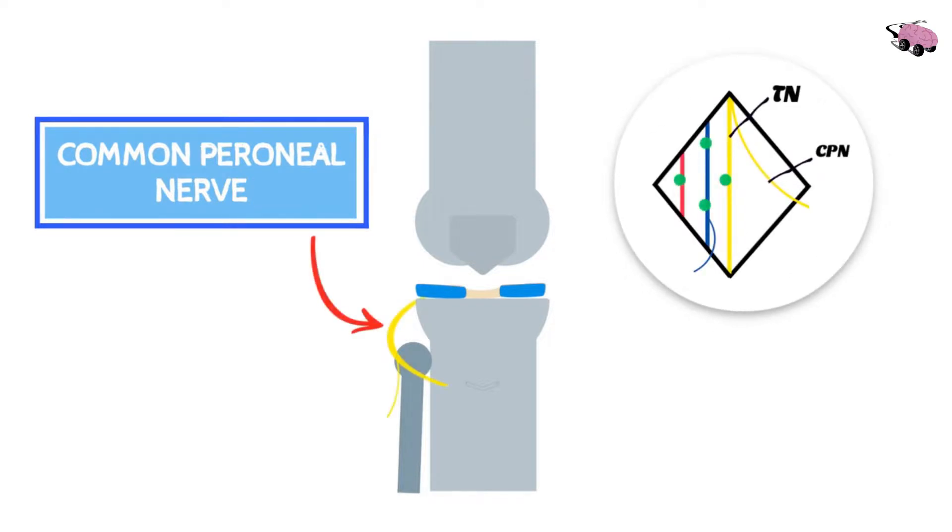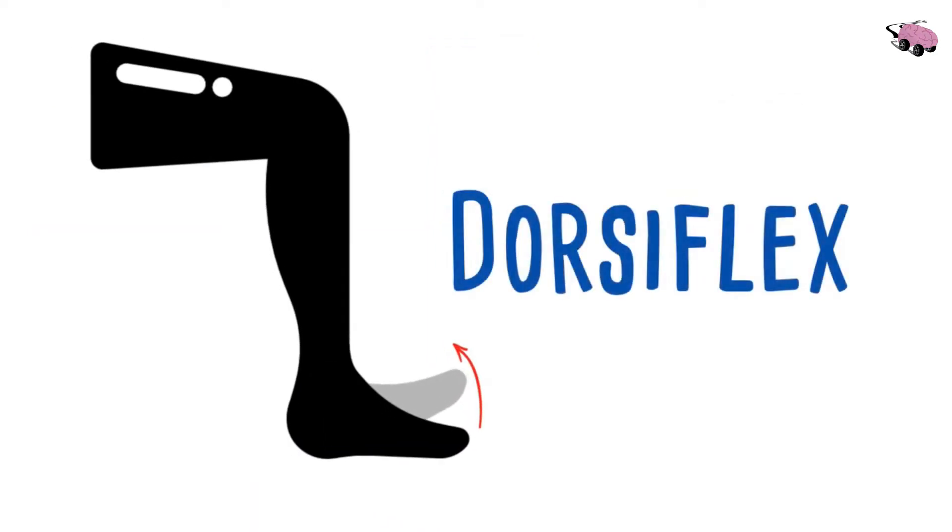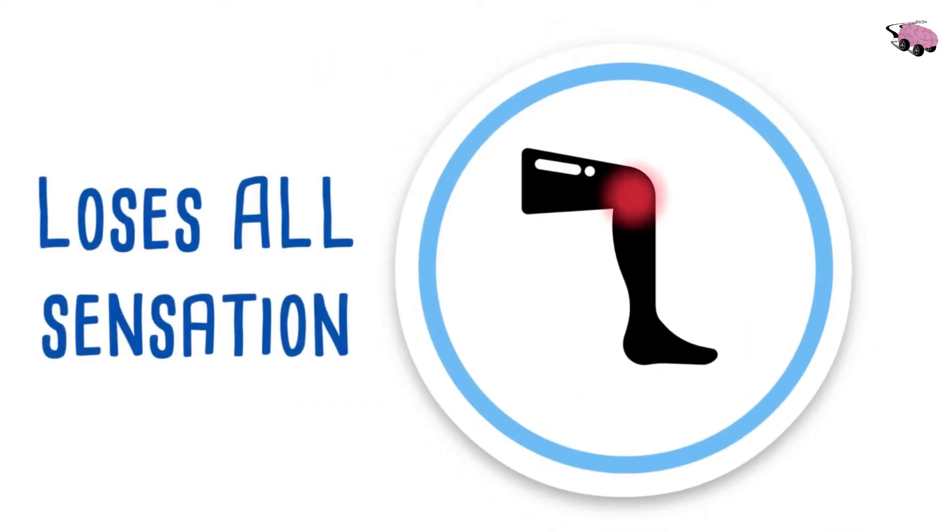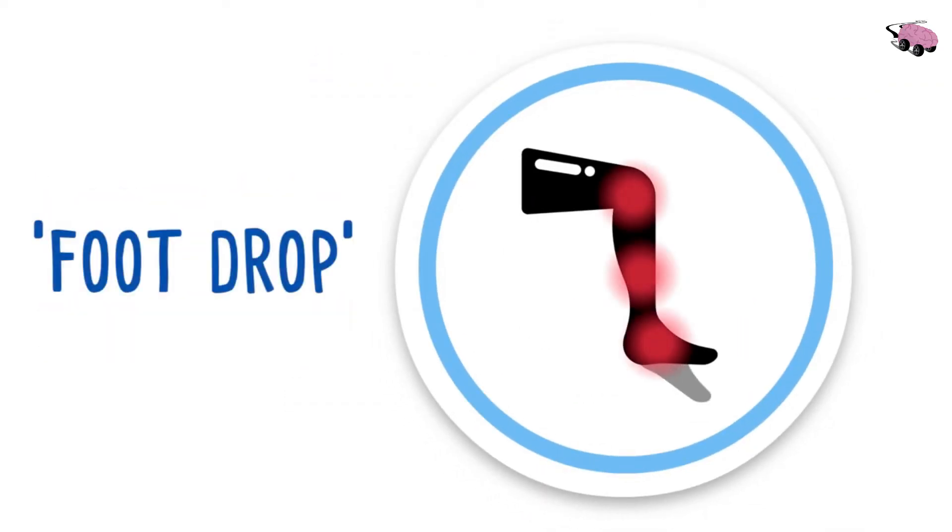The common peroneal nerve wraps around the head of the fibula, and if it is damaged, we find that the person cannot dorsiflex or do eversion of his foot. Patient also loses all sensation in his leg and foot, commonly known as foot drop.